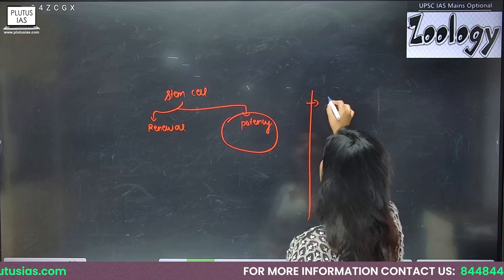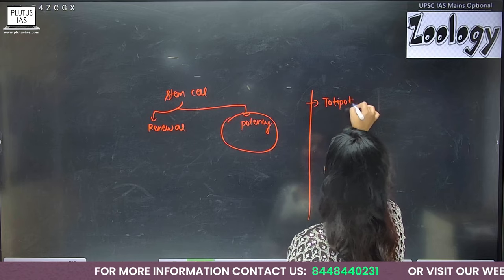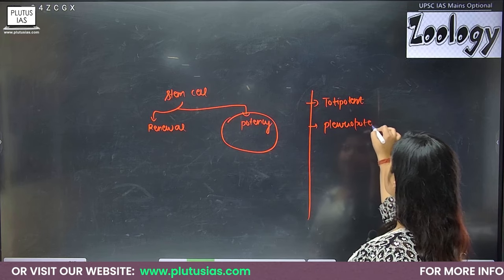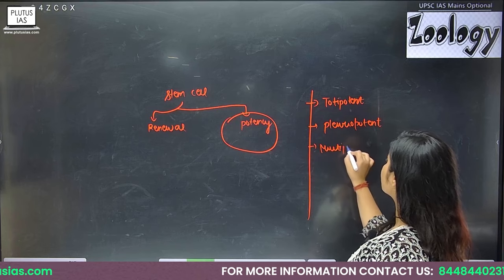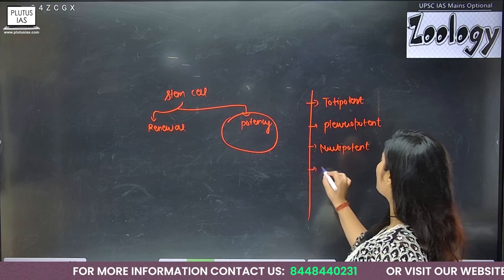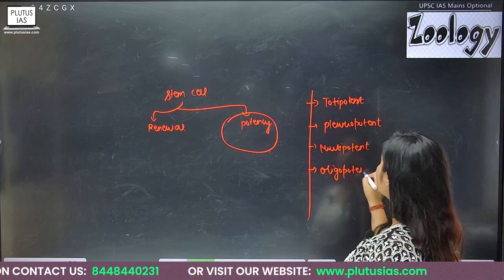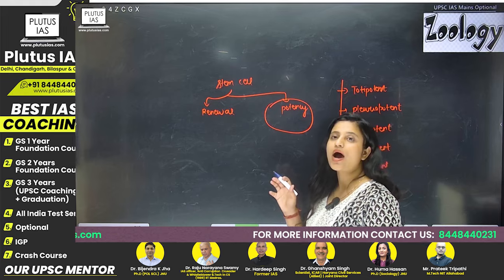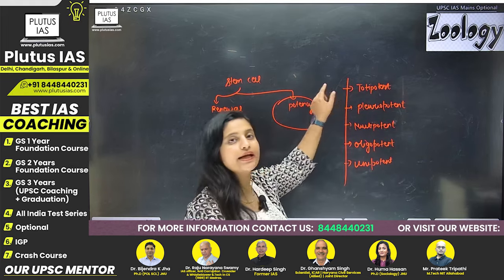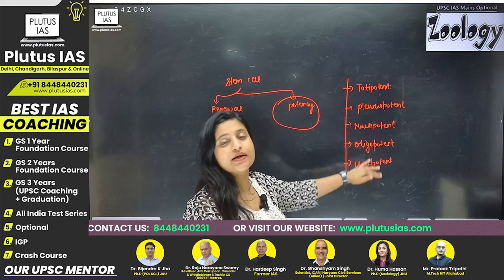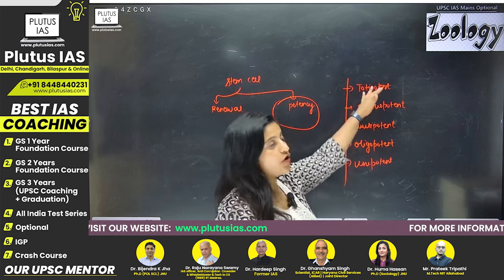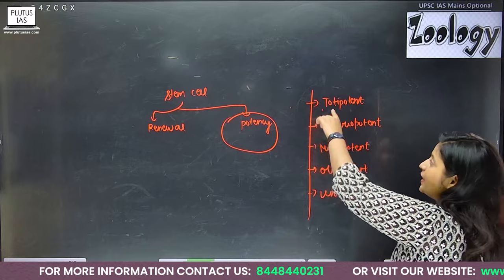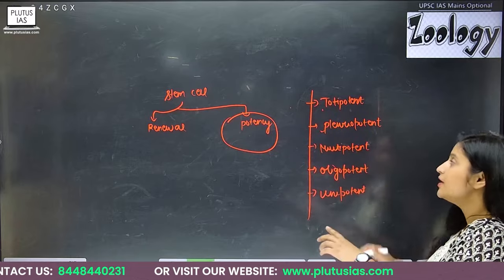The categories based on potency are: totipotent stem cells, pluripotent stem cells, multipotent stem cells, oligopotent stem cells, and unipotent stem cells. From top to bottom, their potency decreases. Totipotent has the maximum potency. Pluripotent has less potency compared to totipotent, and so on down to unipotent which has the least.